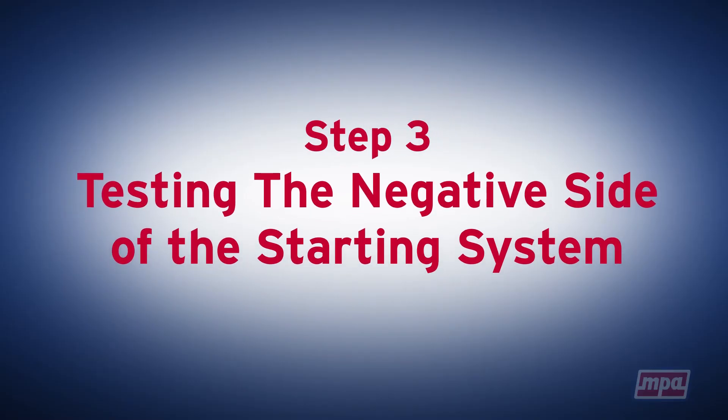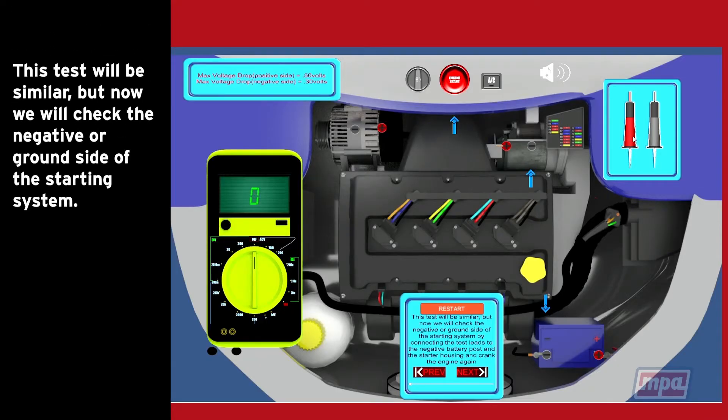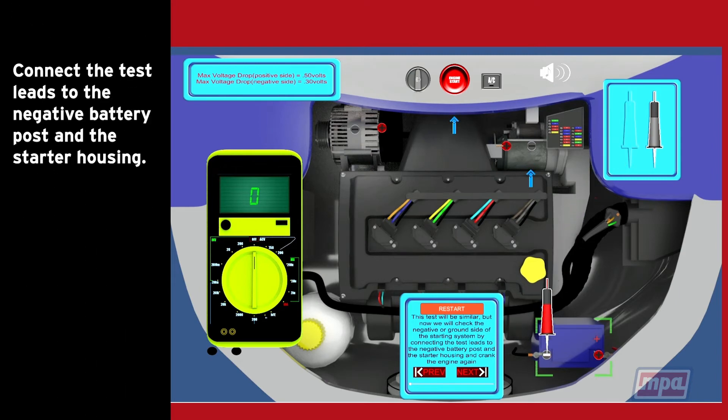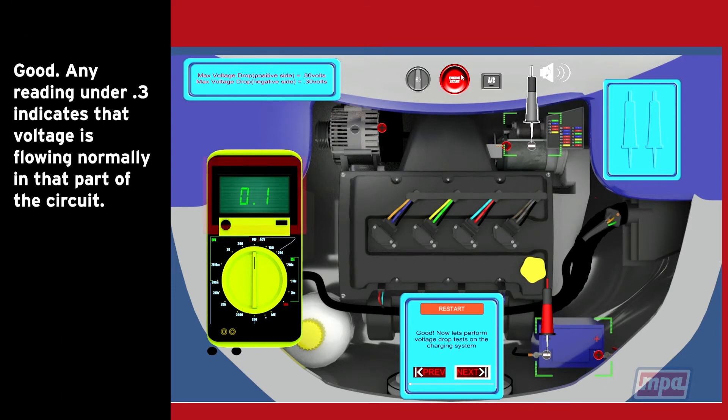Step 3: Testing the negative side of the starting system. This test will be similar, but now we will check the negative or ground side of the starting system. Connect the test leads to the negative battery post and the starter housing. Crank the engine. Good. Any reading under 0.3 indicates that the voltage is flowing normally in that part of the circuit.